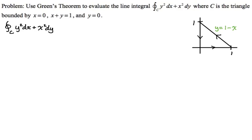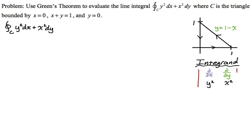Now I need to figure out what I'm actually going to integrate — I have to find the integrand. I'm finding the integrand by doing a two-by-two determinant. The first row is the partial derivatives: partial x, partial y. The second row is P and Q from the line integral P dx plus Q dy, which is always in differential form. P in this case is y squared and Q is x squared. The derivative with respect to x of x squared is 2x, minus the derivative with respect to y of y squared, which is 2y. So our integrand is 2x minus 2y.